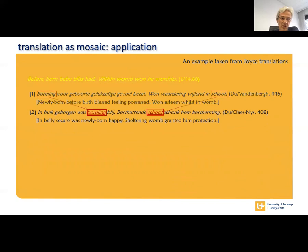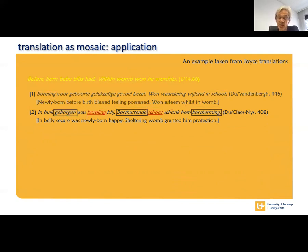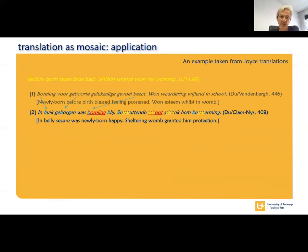In the second translation, the translators have reused the key words bordeling and schoot. So those are mosaic stones that come from the first translation, which also is a source material to the retranslators, although it is a target text. This translation also is standardizing in its lexis, which is modern Dutch. There is no heterology at all. There is a lot of explicitation regarding the idea of security, shelter or protection, which is absent from the source material. And finally, prosody is more regular with four alliterations on b in the first sentence and then four on the palatal sound, although there are two b's in the second sentence as well.